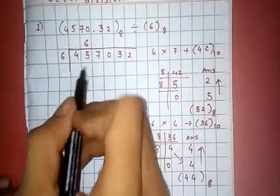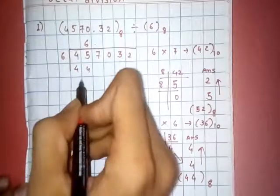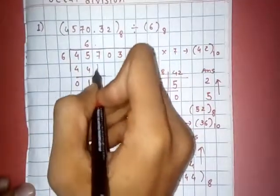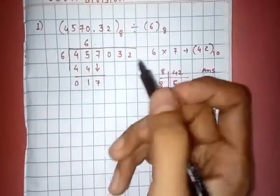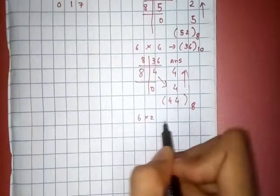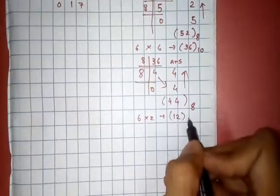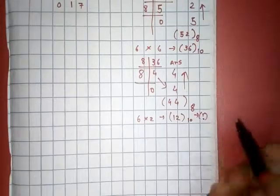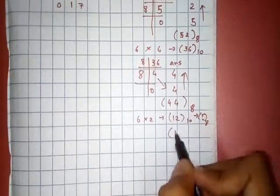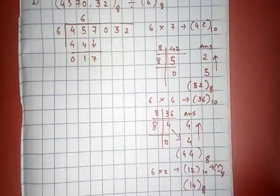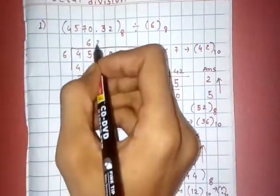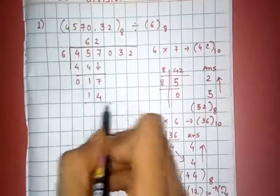Now put this 7 here. Now 17. 6 twos are 12 in decimal, but how can we convert into octal? We use this concept and that value is 14 in octal. You can verify this value by this method. 6 twos are 14, 7 minus 4 is 3, 1 minus 1 is 0.